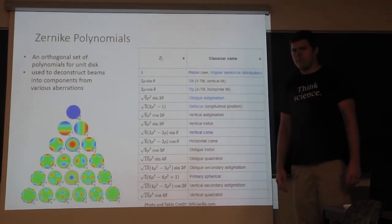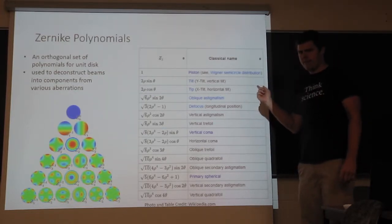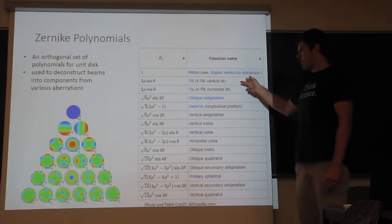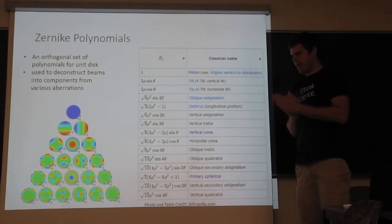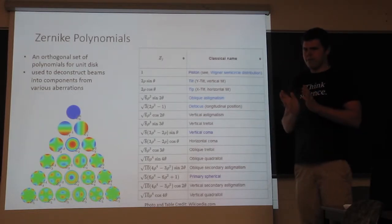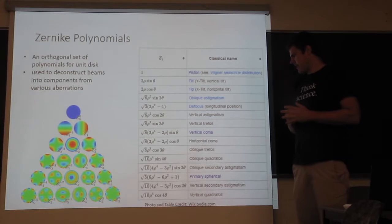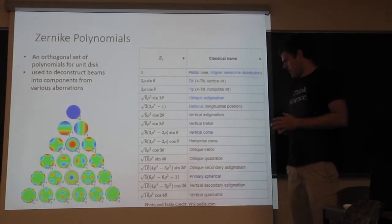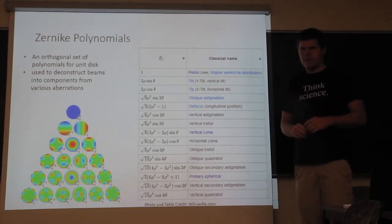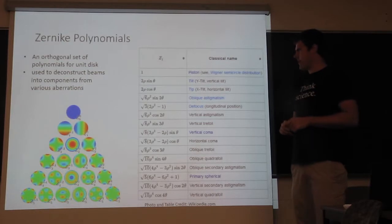So these are useful because each of them can describe a certain aberration in an optical system. So for instance, some of the first couple are tip and tilt, which is just horizontal deflection or vertical deflection. And then you also have defocus, so this is if the beam is diverging or converging. And then a lot of these other ones come up in lens systems, where these are aberrations caused by the lens. So many people are familiar with spherical aberration, where different parts of the beam will focus at different points along the propagation axis.